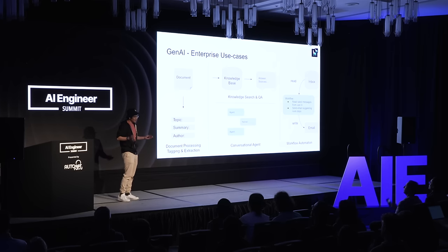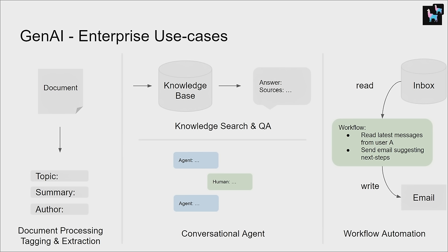Let's get started. Everybody knows that there's been a ton of amazing use cases in Gen AI recently — knowledge search and QA, conversational agents, workflow automation, document processing. These are all things that you can build, especially using the reasoning capabilities of LLMs over your data.